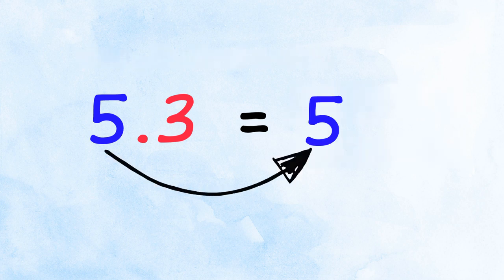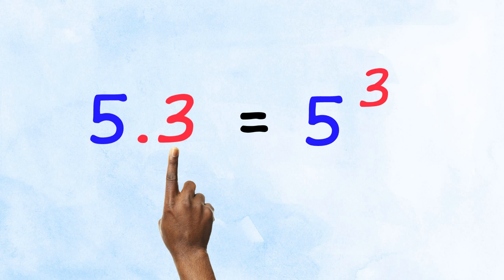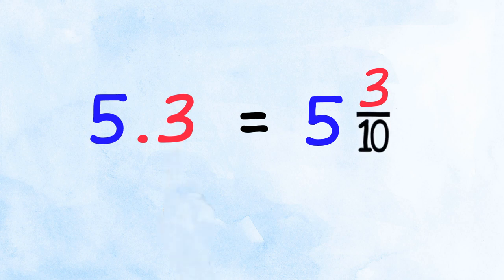5 whole ones here. Point 3 tells us our numerator is 3. And as we only have a single digit after the decimal point, that means tenths. 5 and 3 tenths. OK with that?